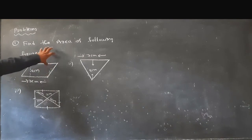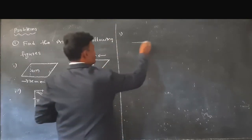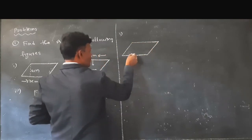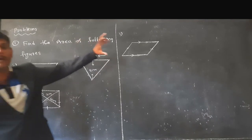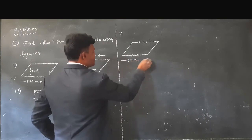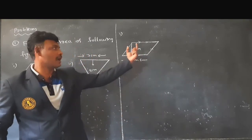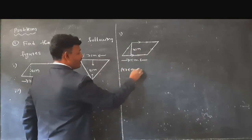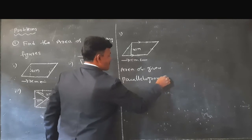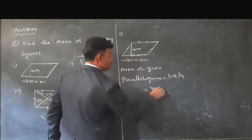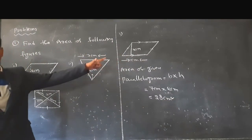Now let us solve problems. Find the area of the following figures. The first figure is a parallelogram. The arrow marks indicate parallel sides. The length is 7 cm and the perpendicular height is 4 cm. The formula for area of a parallelogram is base into height, so 7 into 4 equals 28 cm square. The area of the given parallelogram is 28 cm square.